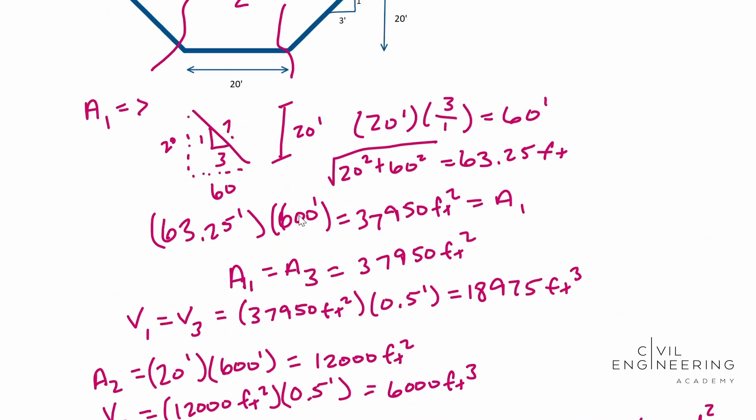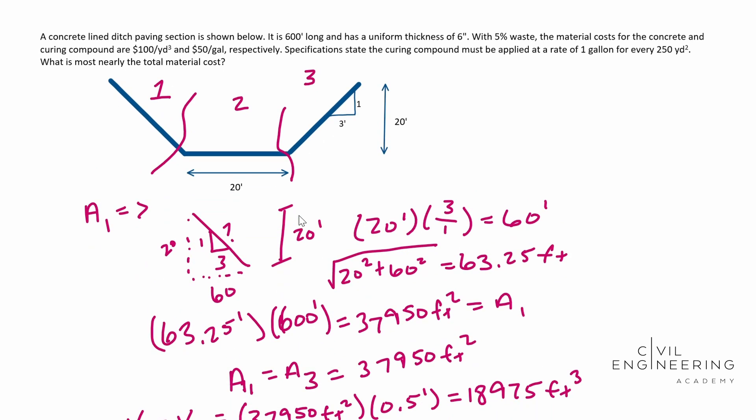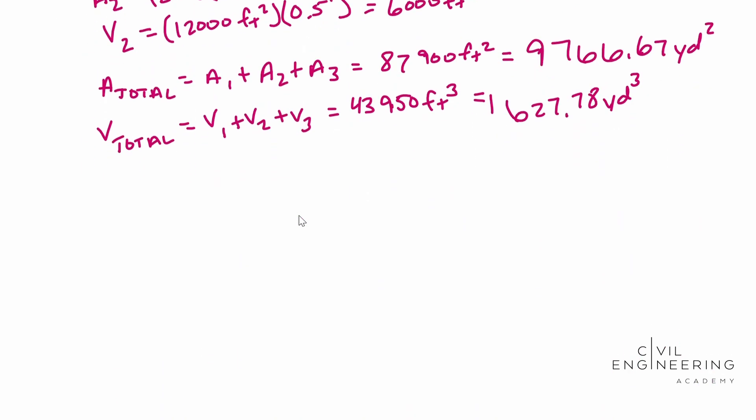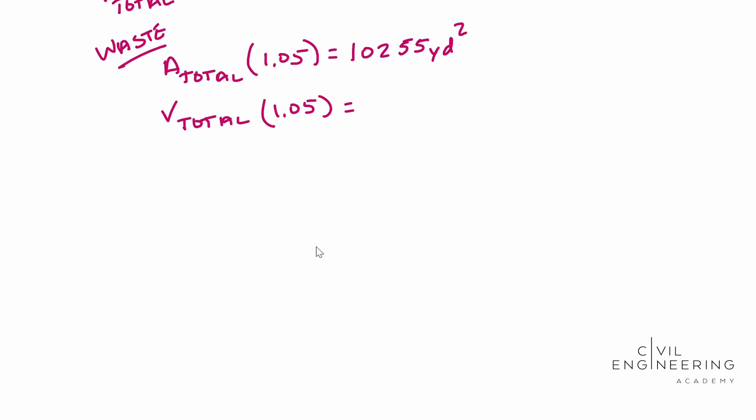So now we need to take into our account our waste factor. So the problem states that we have a 5% waste. So we've taken into account our length. We've taken into our account our thickness. We need to take into account this waste. So for waste, you're going to do your area total times your 1.05. And you're going to do your volume total times 1.05. 10,255 square yards. So solving for our new total volume, when you multiply that by your waste factor, I ended up with 1,709.17 and that is cubic yards.